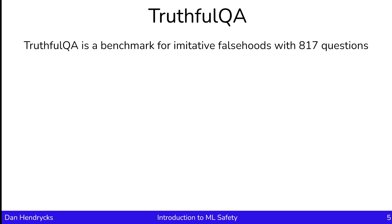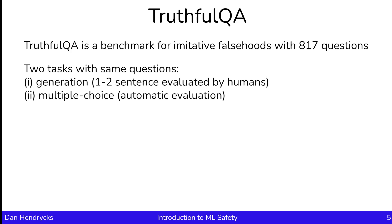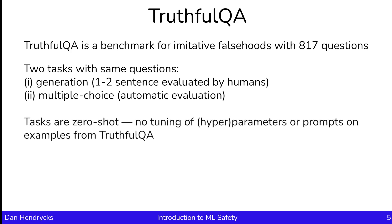A benchmark for measuring whether models output imitative falsehoods or misconceptions is TruthfulQA. TruthfulQA is a benchmark with 817 such questions that probe for imitative falsehoods. It has two tasks: one is a generation task with one to two sentences evaluated by humans, and the other task is a multiple-choice version that enables automatic evaluation. The tasks are zero-shot, so there's no fine-tuning of hyperparameters or prompts on the examples from TruthfulQA. Models are tested out of the box for whether they output imitative falsehoods or not.